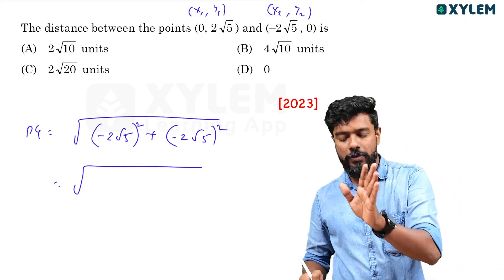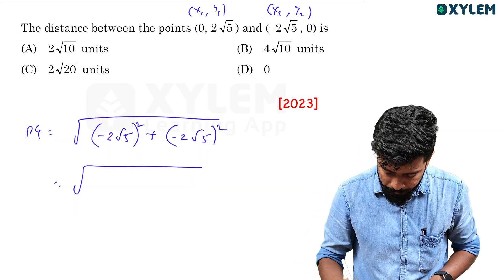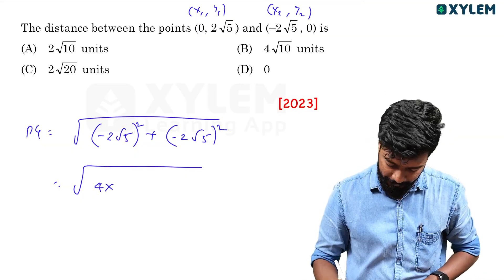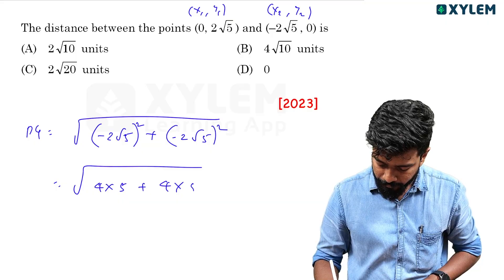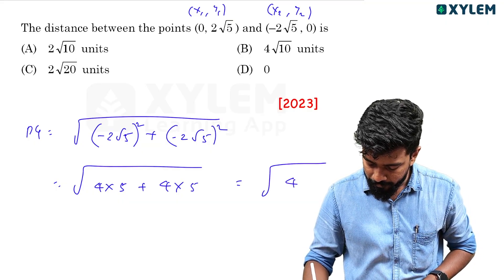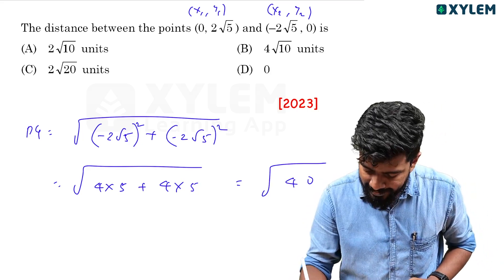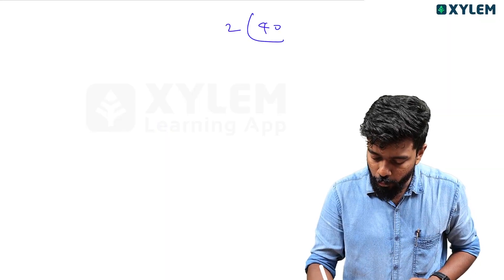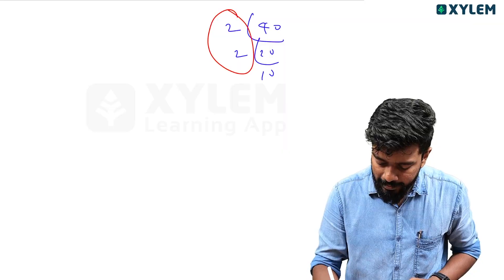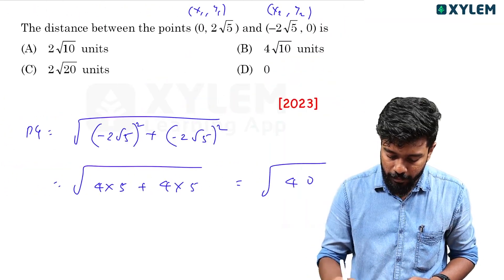Computing: (−2)² = 4, and (−2√5)² = 4 × 5 = 20. So we get √(20 + 20) = √40. Now taking the prime factors of 40: 40 = 2 × 2 × 10, so √40 = 2√10. The answer is 2√10, which is Option A.